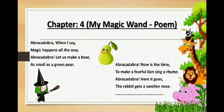Now students, it's time to revise English 1, chapter 4. It is a poem and the poem name is My Magic Wand. You have to learn this poem nicely with spelling. I am going to explain this poem in short so that you will be able to recall what is there in this poem. In this poem, the poet talks about a girl who is a magician. The girl used to do magic by using her magic wand with the magical words abracadabra. Whenever she spoke these magical words along with her wand, magic happens all the way.